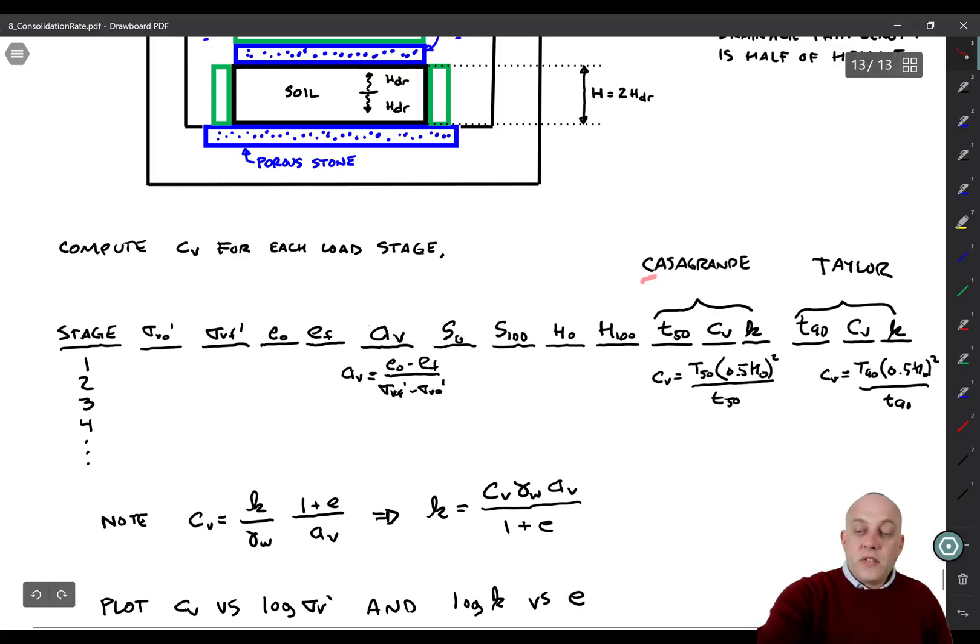Then you can, using Casagrande's and Taylor's method, put in the lowercase T50 and lowercase T90 values after plotting the data and reading them off the graph. And then you can calculate C sub V using either T50 or T90 here. And I'm putting H0, remember H is the height of the specimen, so I'm multiplying by 0.5 for a case of double drainage here and then squaring it. Note that because you're squaring it, if you get the drainage path length wrong, it has a really big effect, like a factor of 4 effect on your computed C sub V.